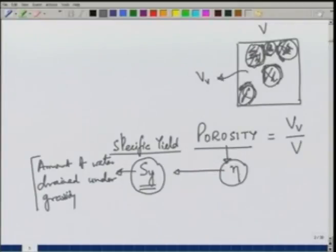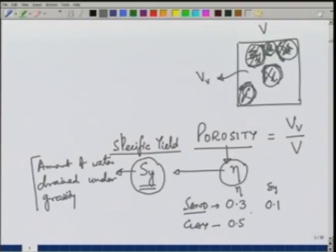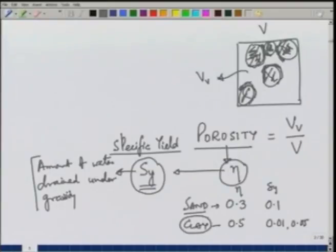A specific yield is the term more important to us than porosity. Two soils may have the same porosity but very different specific yields. For example, sand may have a porosity of about 0.3, and a specific yield of the order of 0.1 or 0.2. While clay can have a high porosity — sometimes as high as 0.5, 0.6 or even higher — but the specific yield is typically small, maybe 1 percent or 0.05. So a clay formation, although it can store a lot of water, the amount of available water will be small. We would prefer a sandy formation in which there is storage and it can also yield sufficient quantity of water.